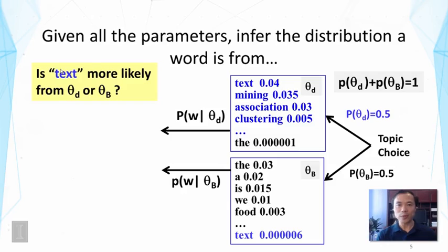Let's assume that we actually know tentative probabilities for these words in theta sub d. So now all the parameters are known for this mixture model. And now let's consider a word like text. The question is, do you think text is more likely having been generated from theta sub d or from theta sub b? In other words, we want to infer which distribution has been used to generate this text.